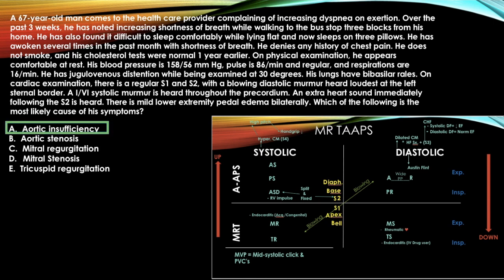The answer is aortic insufficiency. There's a blowing diastolic murmur heard loudest at the left sternal border — that points to aortic insufficiency on the chart. They also throw in an S3 heart sound, which could suggest dilated cardiomyopathy or CHF, but those aren't answer choices. Pulmonic regurg is also possible but not an answer choice, so aortic regurgitation is the only option that makes sense.